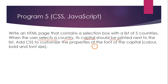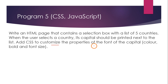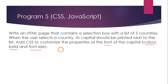For example, if you select India, Delhi should be displayed as the capital. They are also asking us to add CSS — cascading style sheets — for customizing the look of the capital, specifically to change font properties like color and bold, and also to change the font size.